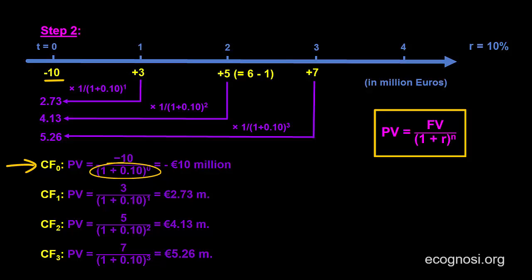Let's now discount the other amounts to get them in present value terms. As regards cash flow 1, 3 over 1.1 to the 1st power equals 2.73. And remember that our amounts are in millions of euros.